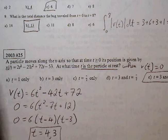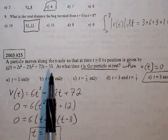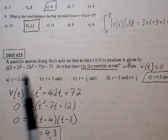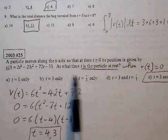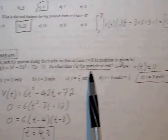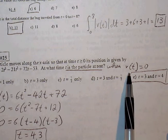2003, number 25. A particle moves along the x-axis so that at time t is greater than or equal to 0, its position is given by x of t. At what time is the particle at rest? So we can find out when the particle is at rest when we set our velocity equal to 0.